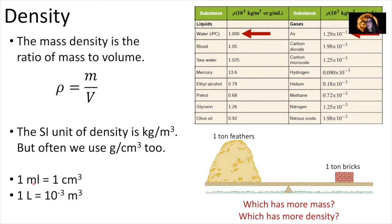One milliliter is the same as one cubic centimeter, and one liter equals 10 to the minus three meters cubed. Here's a table of densities for different substances — you can find similar tables in your textbook. We will use the density of water a lot: one gram per centimeter cubed, or 1000 kilograms per meter cubed.